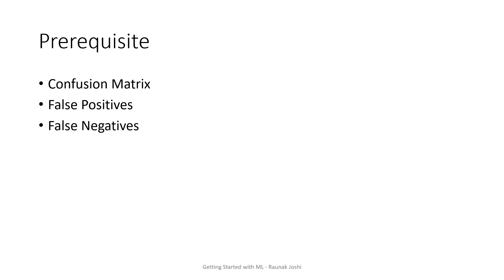Right before I dive into the concept of Type 1 and Type 2 error, I want to give you a glimpse of the prerequisite required for this tutorial. It is going to require the confusion matrix, which has already been covered in this playlist. Today I'll give you a small revision over it. The two main concepts from the confusion matrix that you are going to focus on are false positives and false negatives.